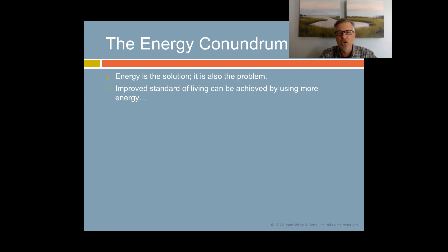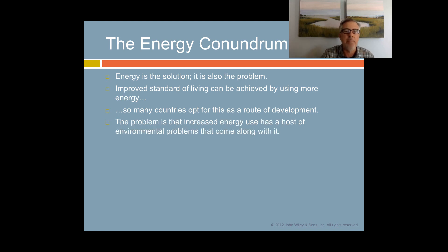Improved standard of living can be achieved by using more energy. In other words, energy is a very good way to improve the standard of living for a lot of people quickly. This is the route that many nations have opted for to affect development. The problem is that increased energy use has a host of environmental problems that come along with it. We've probably only seen the tip of the iceberg by focusing on climate change, which admittedly is the most important and pressing at this point, making all the others look small. But the other problems are significant as well.